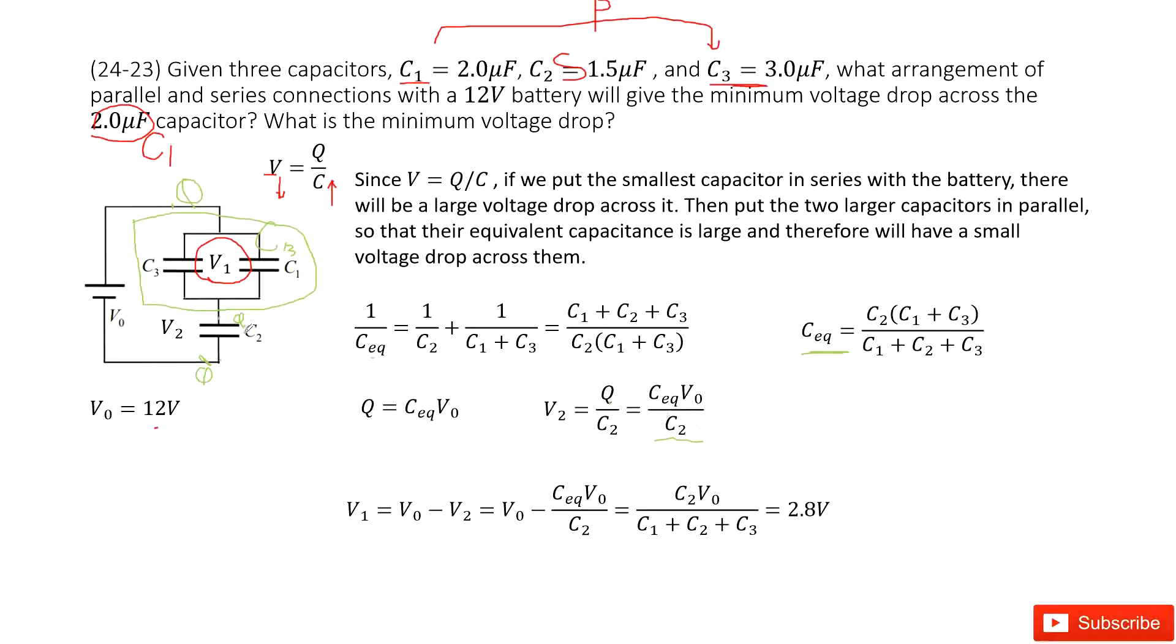So now we can write V2 as Q divided by C2. Input Q inside, we can see the V2 function looks like this. Then V1 is using V0 minus V2. Input V2 inside, and then input C equivalent inside, we get the function for V1. Now we can input all the given quantities and get the answer. Thank you.